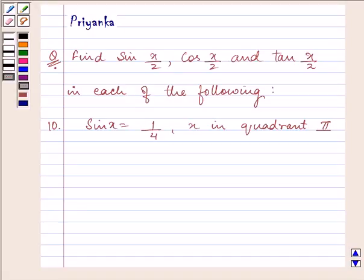Hi and welcome to the session. Let us discuss the following question: find sin x/2, cos x/2, and tan x/2 in each of the following. Now in this question we are given the value of sin x as 1/4 and it's also given that x lies in the second quadrant.